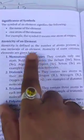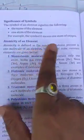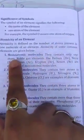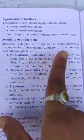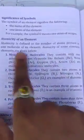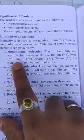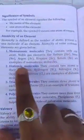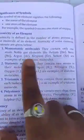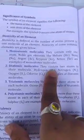Atomicity — what is atomicity? Atomicity means the number of atoms present in one molecule of an element. Atomicity are of the following types. First, monoatomic: monoatomic means they contain only one atom. These are called monoatomic molecules. Examples: helium, neon, argon, krypton, xenon — these are the examples of monoatomic molecules.